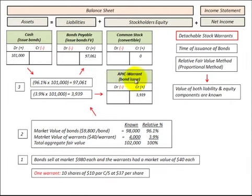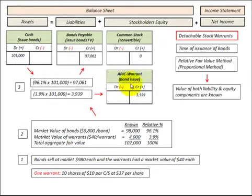We do that using two different methods — either the proportional method or the incremental method. We make this separation between debt and equity so that when these warrants are exercised, we can allocate their price, or what we receive for them, as part of the equity portion of our exchange.